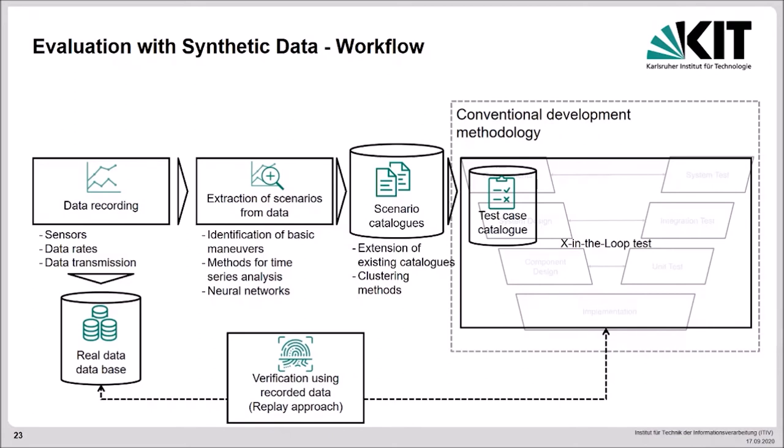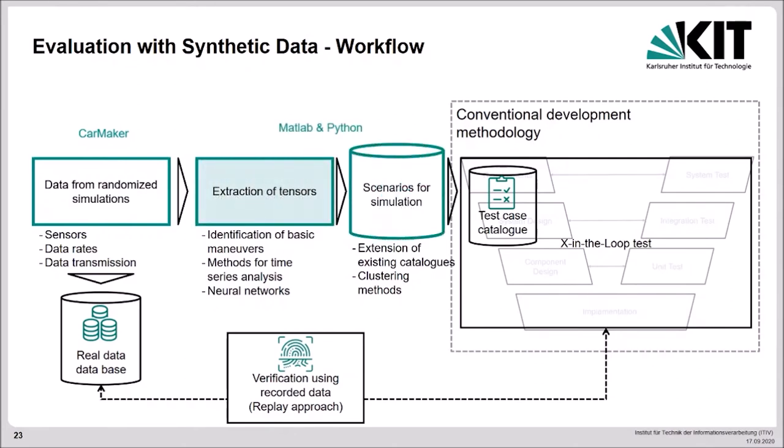For this issue, we generated randomized scenarios on highways using CarMaker with different agents and tons of different lane change and overtaking maneuvers. This way, several thousand kilometers were generated and used as input for the training of our artificial neural network. Here is shown which tools were used for the entire workflow in my work.